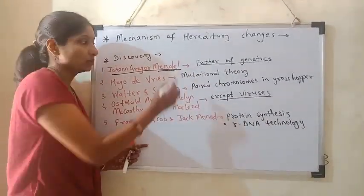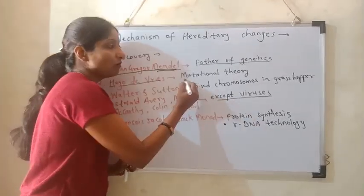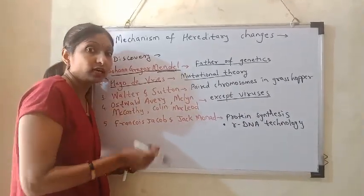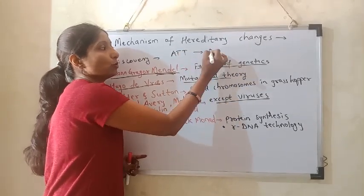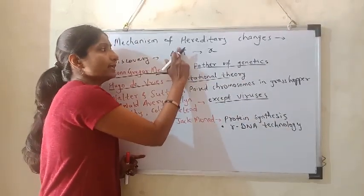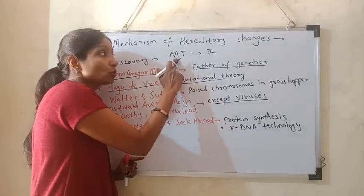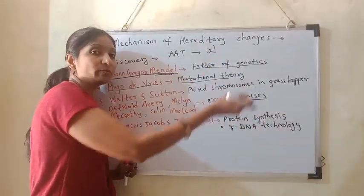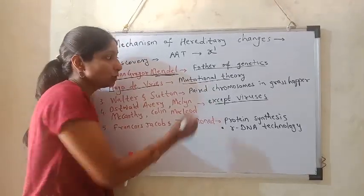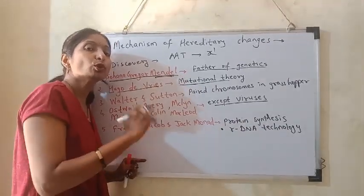The second scientist, Hugo de Vries, discovered the mutational theory. Suppose a gene has the code A-T-T, then protein X will be made. But suddenly one code changes — A-T-T becomes A-A-A. That is a sudden change in the code. The code changes, so the amino acid also changes, and further along the protein also changes, and ultimately the body character also changes. So mutation means a sudden change in the gene codes that leads to a difference in appearance or body character.